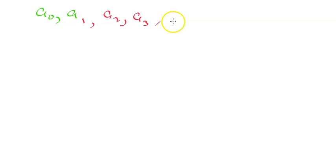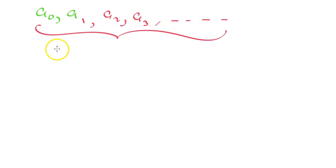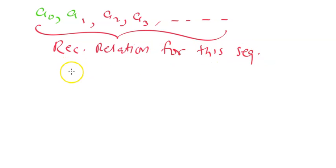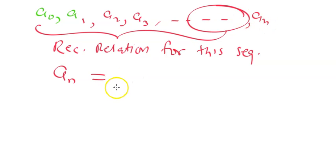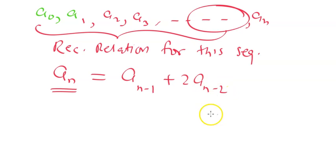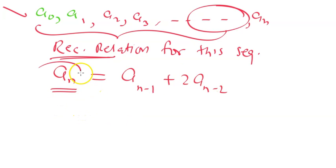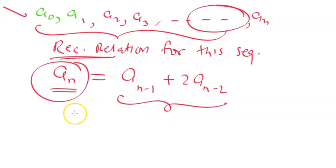Now, what is a recursive function? If you remember in the last lecture, we saw what is the recurrence relation for a sequence. If you have a sequence a0, a1, a2, a3 and so on, then the recurrence relation for this sequence is basically an equation which represents any term an in terms of some of the previous terms, for example an-1 plus an-2. So every term is represented in terms of previous few terms — this is called a recurrence relation.